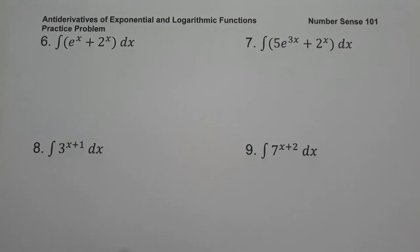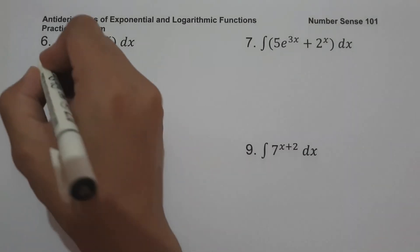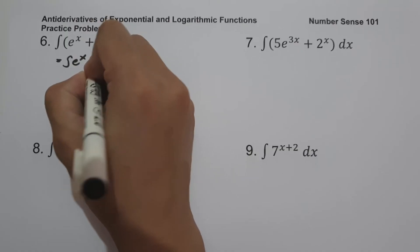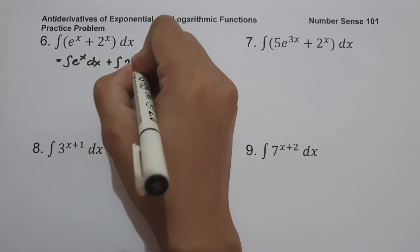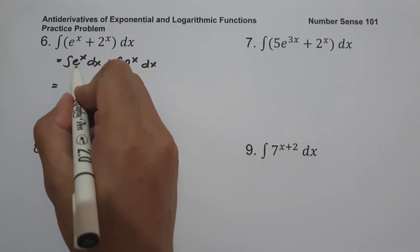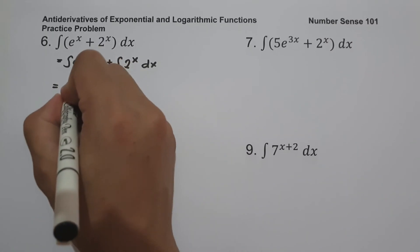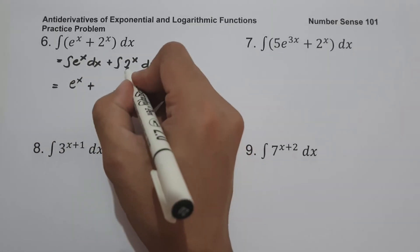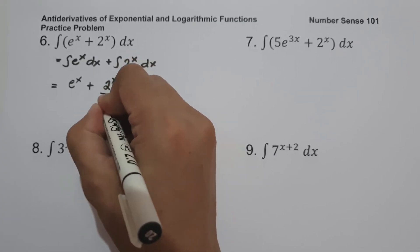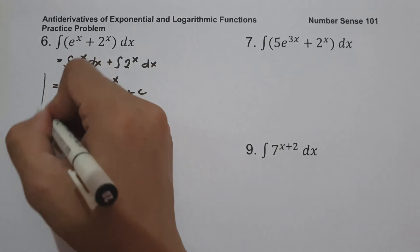On example six, what is the antiderivative of (e^x + 2^x) dx? This combines our first and second formulas. We split it into the antiderivative of e^x dx plus the antiderivative of 2^x dx. Simplifying, the antiderivative of e^x dx is e^x, and the antiderivative of 2^x dx is 2^x over ln(2), giving e^x + 2^x/ln(2) + c.